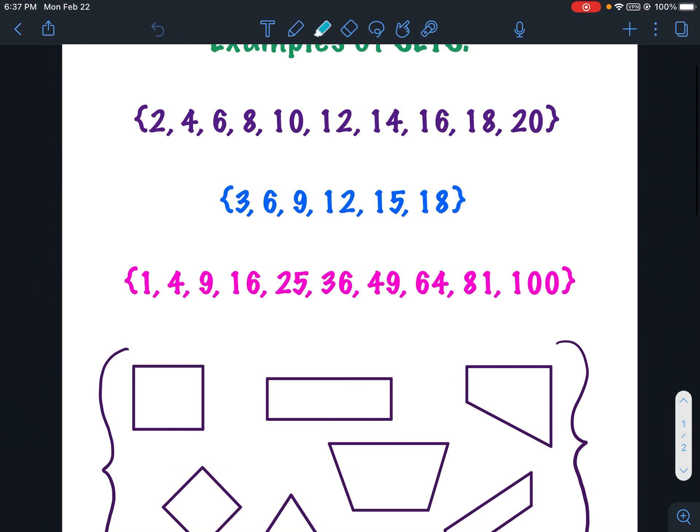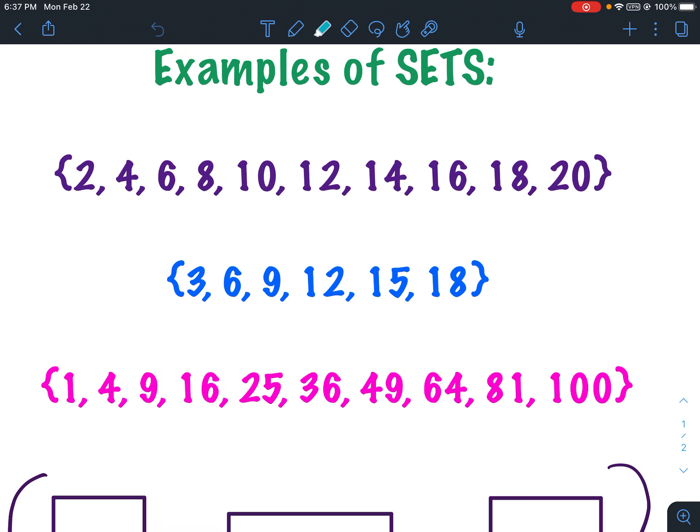So this first one, the top one here in purple. What is that a set of? You've got 2, 4, 6, 8, 10, 12, 14, 16, 18, and 20. That is a set of either, you could say, even numbers up to 20, or it's a set of multiples of 2 up to 20. What are these symbols on the ends called? Well, we know that symbols that look like this are called parentheses. Symbols that look like this are called brackets. So what are the symbols at the ends of the sets here? Those are called braces. So again, the symbol at the end of each set is called a brace.